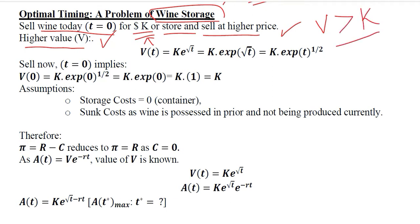How is this higher value measured? The higher value depends upon time — specifically, it is the initial value with exponential growth over time, as the variable t shows. We write it in a different form of the exponential function: instead of writing square root, we use the power of 1 over 2. Now, if we sell it now, time is zero, so we substitute t equals zero into the function where the variable t exists.